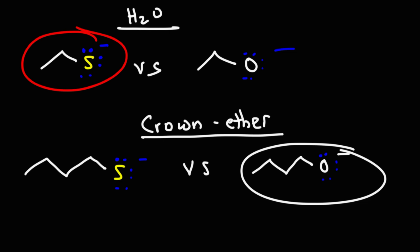So that's basically it for this video. To review: if you have a neutral molecule versus one that has a negative charge, the one with the negative charge is typically more nucleophilic. Nucleophilic strength increases towards the left on the periodic table. It also increases downward in a protic environment, but increases upward in an aprotic environment.